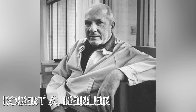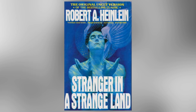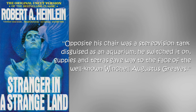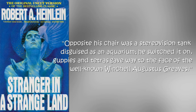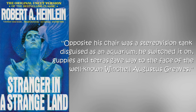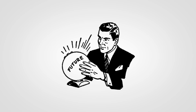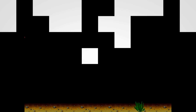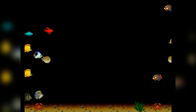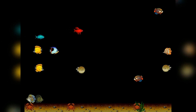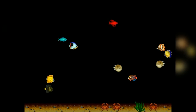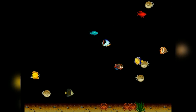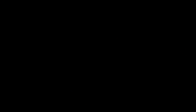Of course, this was more than two decades after American science fiction writer Robert A. Heinlein gave a description of something rather screensaver-like in his 1961 novel Stranger in a Strange Land. "Opposite his chair was a stereo vision tank disguised as an aquarium. He switched it on; guppies and tetras gave way to the face of the well-known windchill Augustus Greaves." You can find this quote quite often in articles about technologies being predicted before they came into existence. Now whether or not it's technically correct to use the term prediction in this specific context, one thing is for sure: Heinlein did give quite an accurate description of a particular style of screensavers that was quite popular when screensavers were a thing. And that, however, is not today.